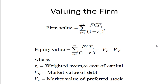In order to value a firm, we can take the present value of all of the free cash flow for all periods from time period 1 to infinity, discounted by 1 plus the weighted average cost of capital. If we wanted the equity value, we could find the firm value and subtract out the market value of the debt and also subtract out the market value of the preferred stock.